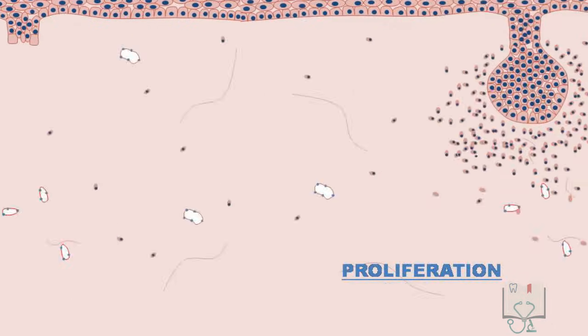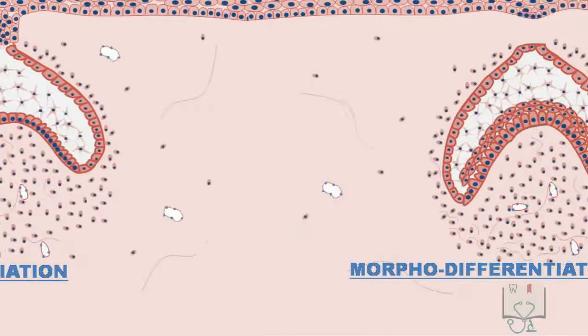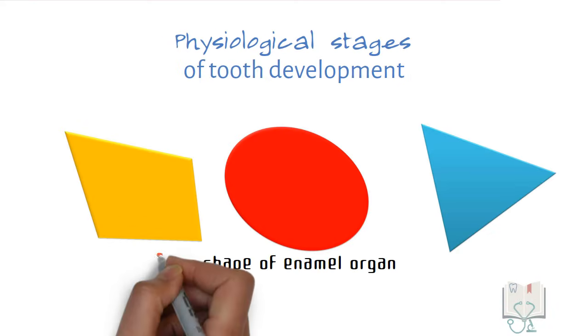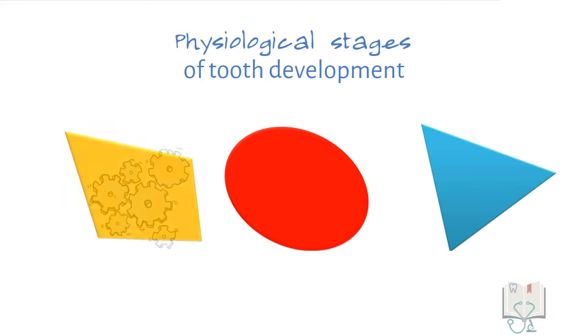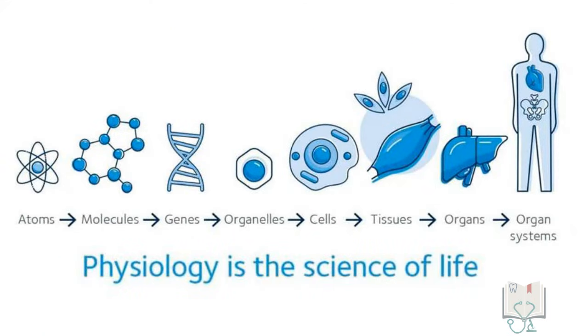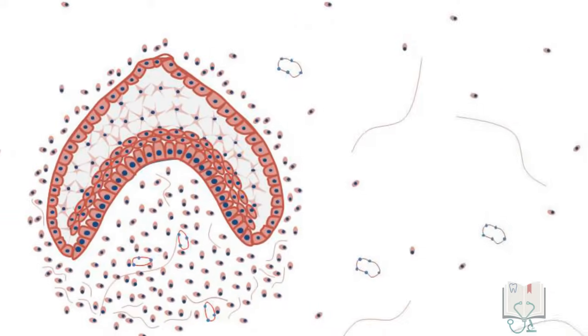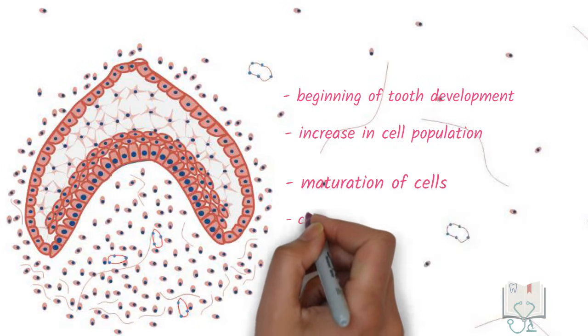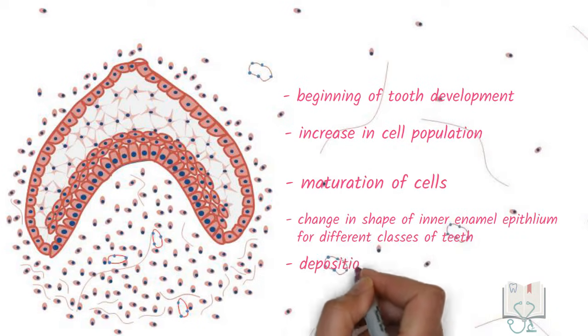Here, we will study the same procedure of tooth development but under the heading of physiological stages. The physiological stages of tooth development explain the process not on the basis of the shape of the enamel organ, but on the basis of the physiological procedures that take place in the tooth germ. Physiology can be described as the study of the mechanism of function of any body tissue. Therefore, here we study tooth development by understanding the various mechanisms the cells of the tooth germ undertake for the formation of the tooth.